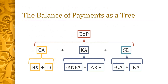We can use a tree structure to summarize the relationships we have learned. The balance of payments BOP equals the sum of CA, KA, and SD — a sum that always equals zero. CA in turn equals the sum of NX and IB. KA equals the sum of minus delta NFA and minus delta RES. Finally, SD equals the sum of minus CA and minus KA.